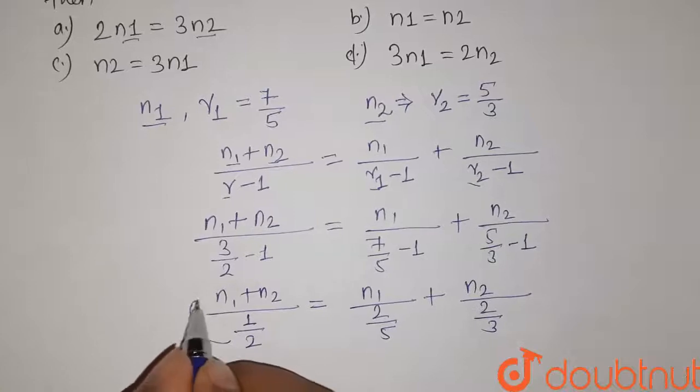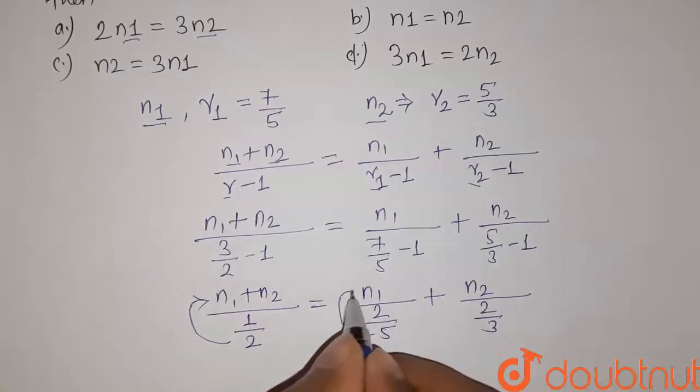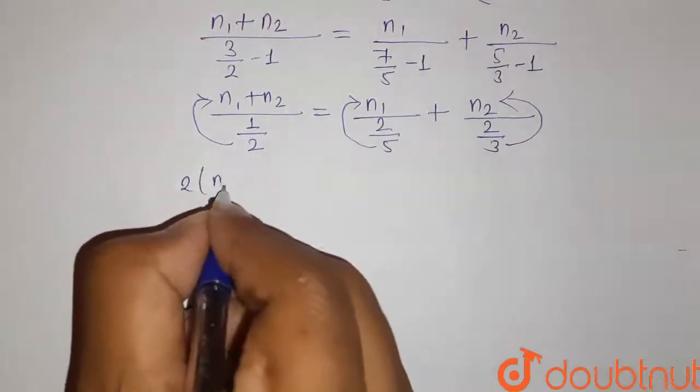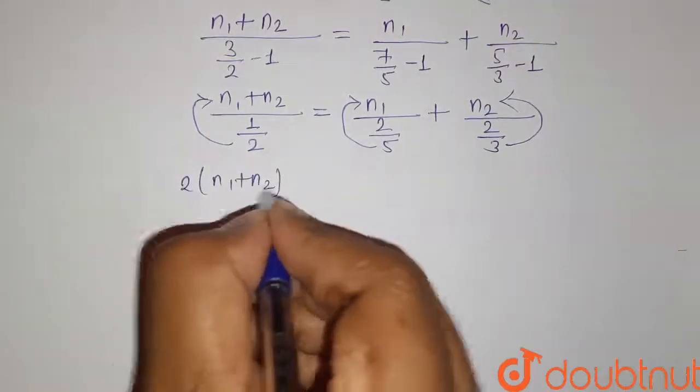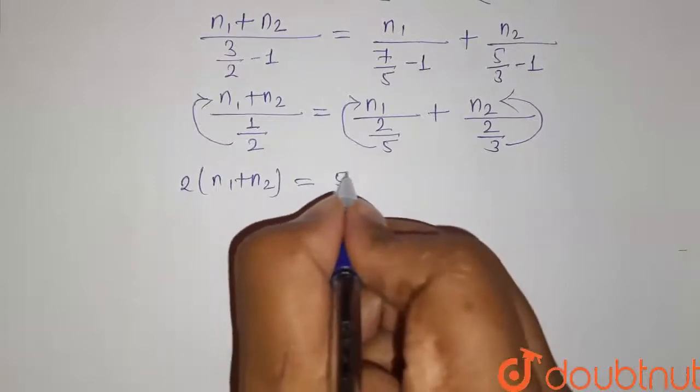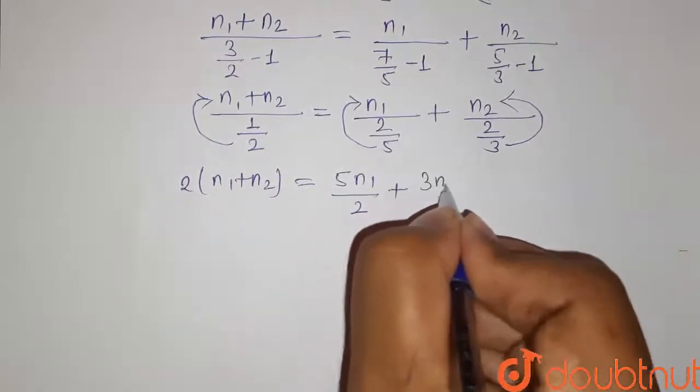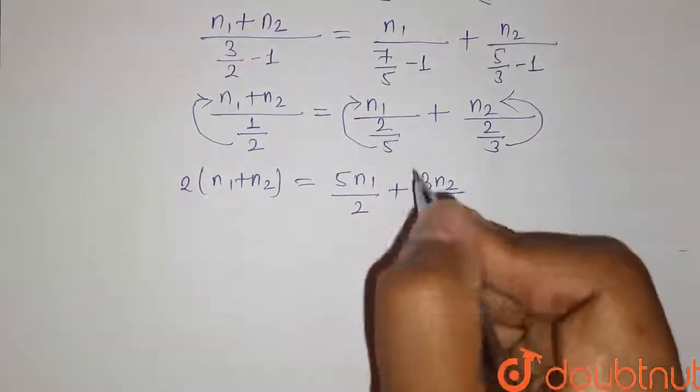Now taking this term to the other side, we have 2(N1 + N2) equals 5N1/2 plus 3N2/2.